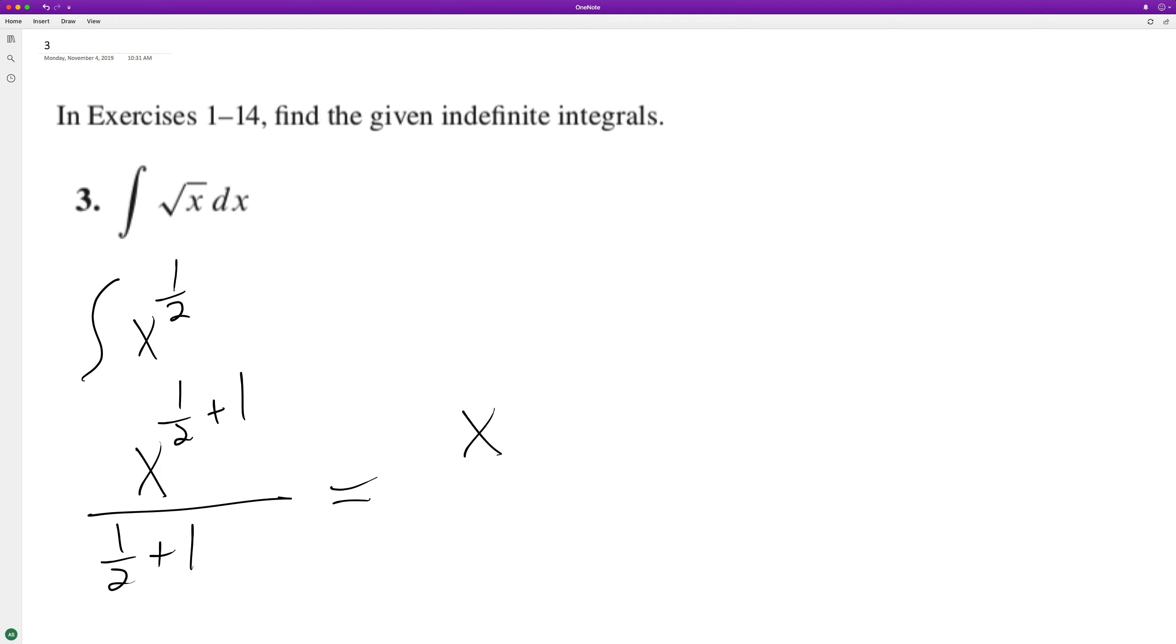So this ends up being x raised to the 3 halves divided by 3 halves, which is the same thing as x raised to the 3 halves times 2 thirds. You just reciprocate what's underneath the fraction.